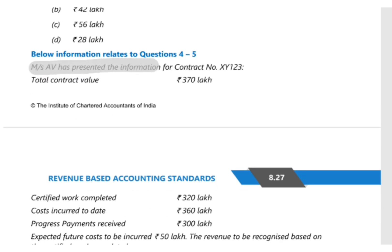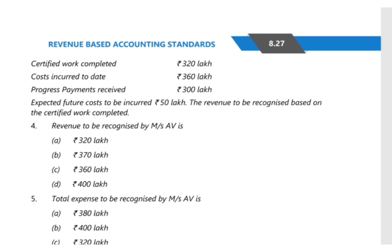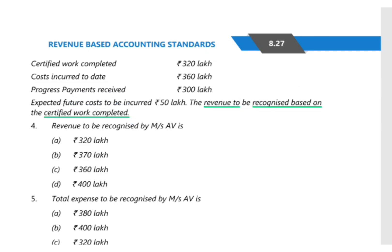We are given that Mrs. AV has presented the information for contract XY123. The total contract value is 370 lakh, certified work completed is 320 lakh, and cost incurred to date is 360 lakh. Progress payment received is 300 lakh. Revenue is to be recognized based on certified work completed, so revenue to be recognized is 320 lakh — option A.